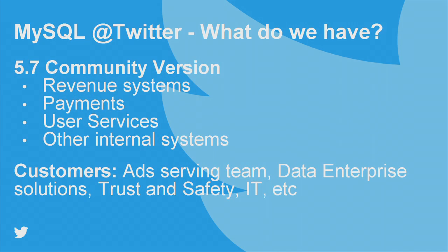We decided to go to 5.7 community version. We'll decide maybe today or tomorrow if we're going to go to Enterprise Edition. On 5.7 community, we run around 100 clusters. We have revenue systems, payment systems, user services, and other internal systems. Our customers here are mostly internal: the ad serving team, data enterprise solutions team, trust and safety — which is very important to Twitter, especially for complaints about bullying — and other IT stuff.